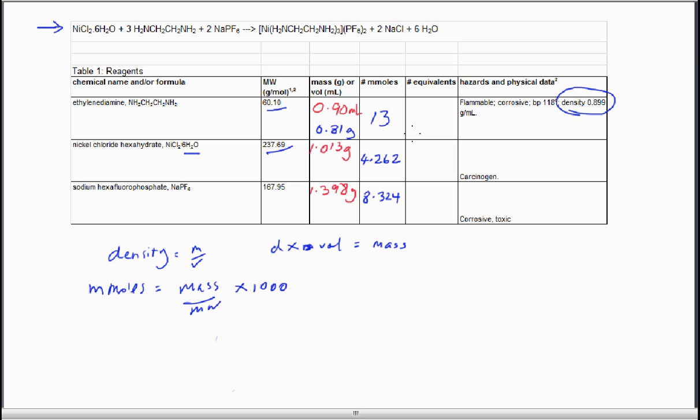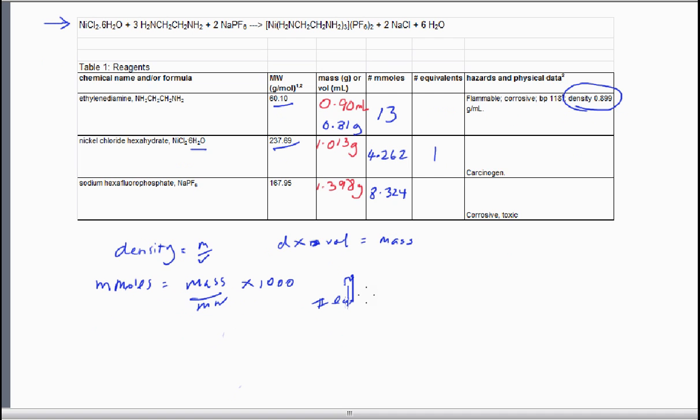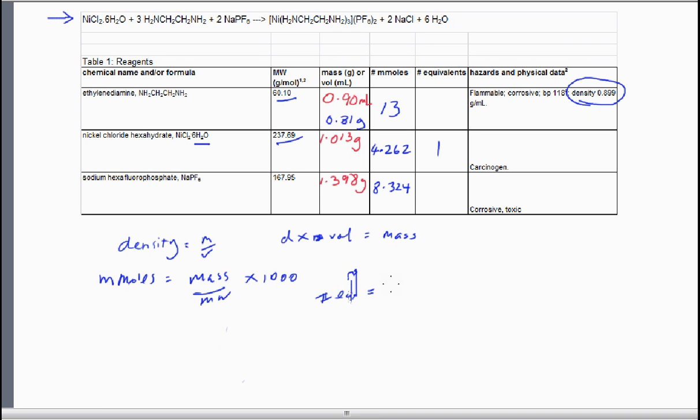Now we can look at the number of equivalents, which we couldn't do until we had completed that column. We look through the column and find the smallest value, which in this case is 4.262 for the nickel chloride, and we call that 1. Now we need to find the ratio. The number of equivalents of the ethylenediamine is 13 divided by 4.262, and that equals 3.2 equivalents. The value for the sodium hexafluorophosphate comes out to be 1.95 equivalents.